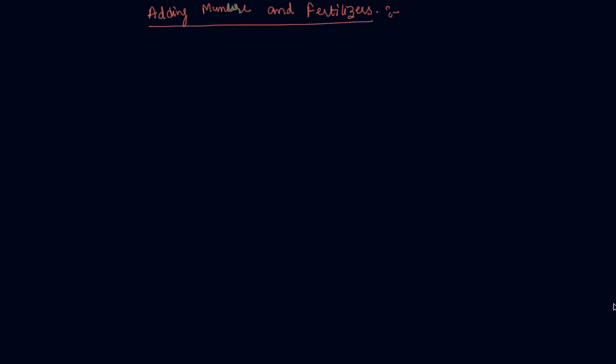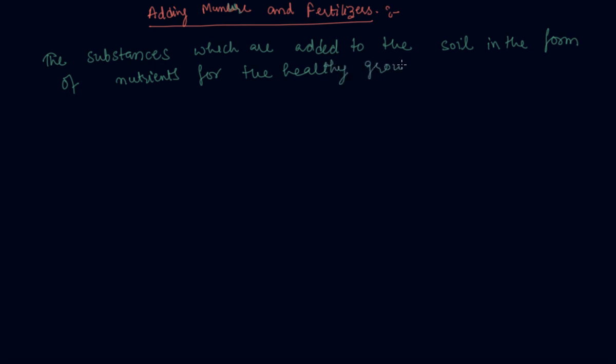Hello students, my name is Sumit Mehta. Today in this lecture we will discuss adding manure and fertilizers, which is a third practice of crop production. The substances which are added to the soil in the form of nutrients for the healthy growth of plants are called manure and fertilizers.